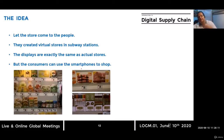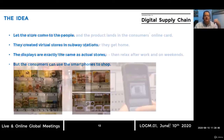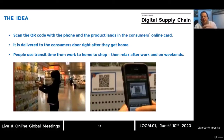The idea was to let the store come to people, instead of people going to stores. They created virtual stores in subway stations, especially those related to where people go to work. These displays are exactly the same as actual stores, but consumers buy using their smartphones — scanning a QR code so that the product is added to their online shopping cart. Products are then delivered after the consumer gets home.